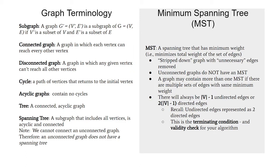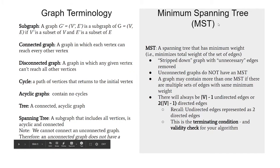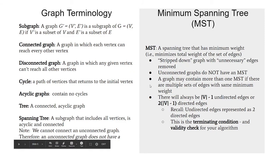A minimum spanning tree — we'll almost always abbreviate this as MST — is a spanning tree with minimum weight. That means if I look at all possible spanning trees of some graph and sum up all the edge weights of each, I pick whichever one had the smallest sum. Graphs can potentially have multiple spanning trees, and this doesn't have to be unique. If you have a complete graph where every vertex is connected to every other vertex with the same edge weight, there are many possible minimum spanning trees.